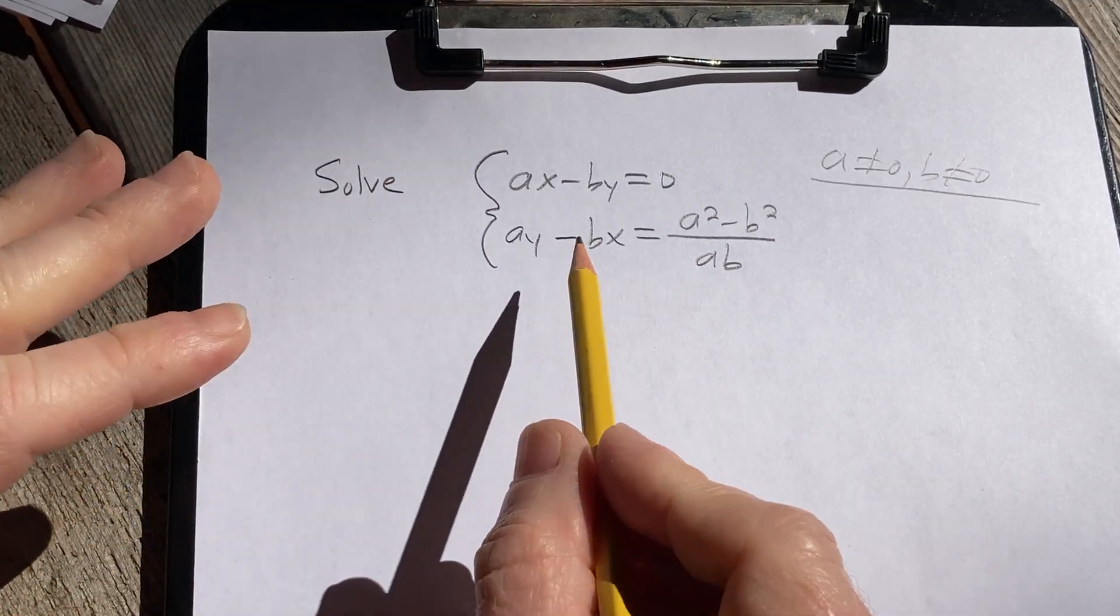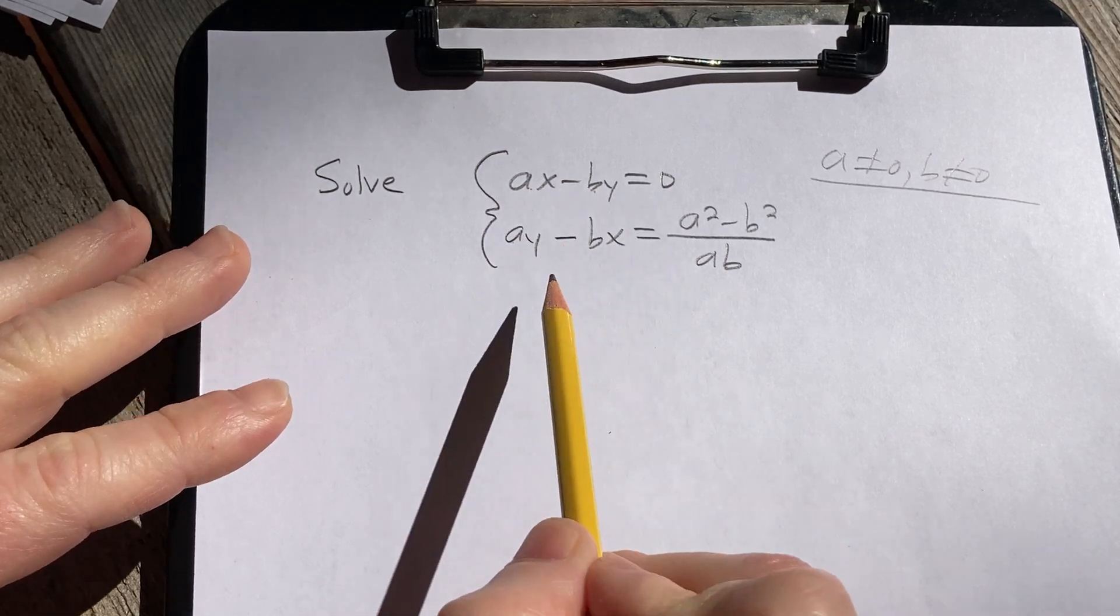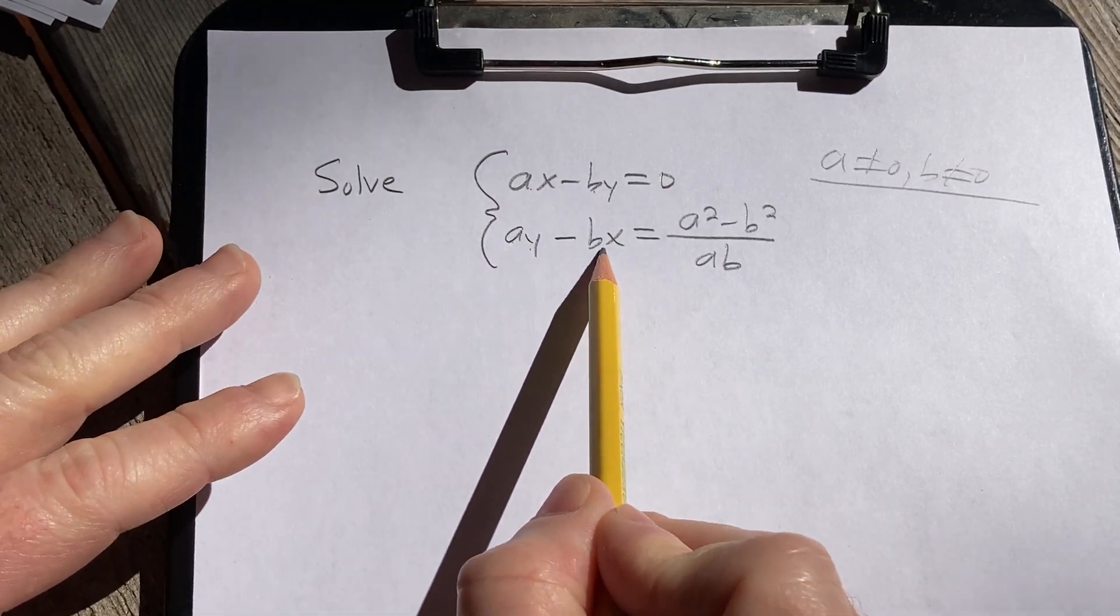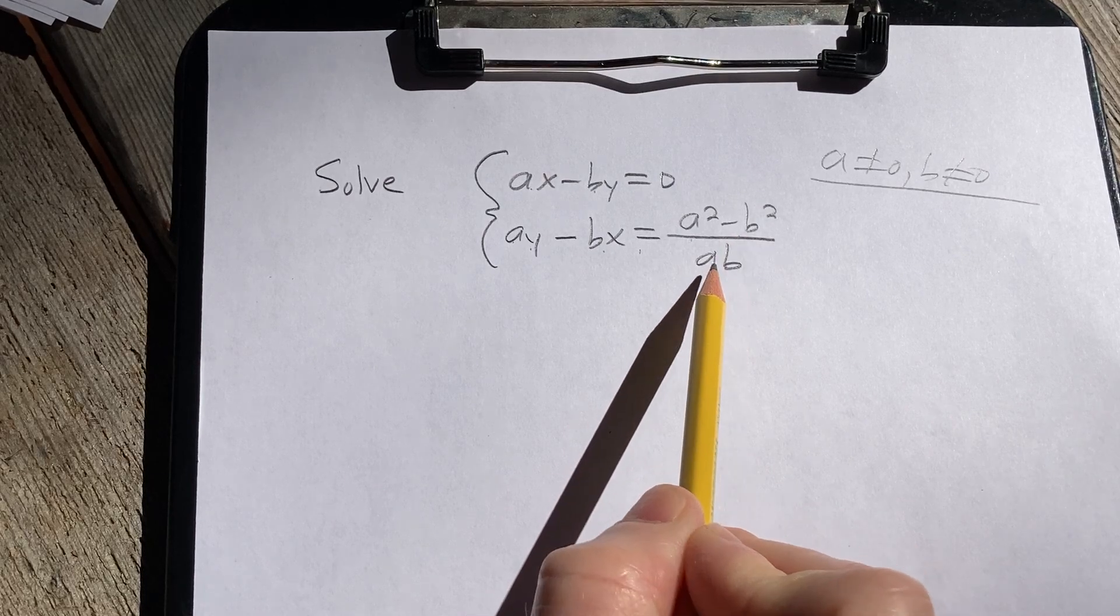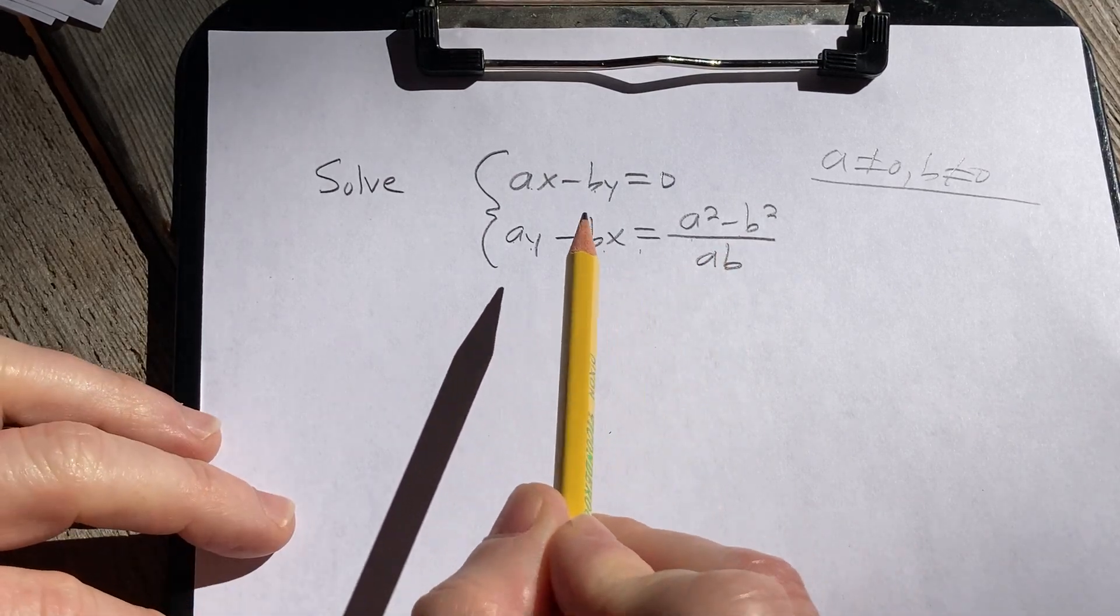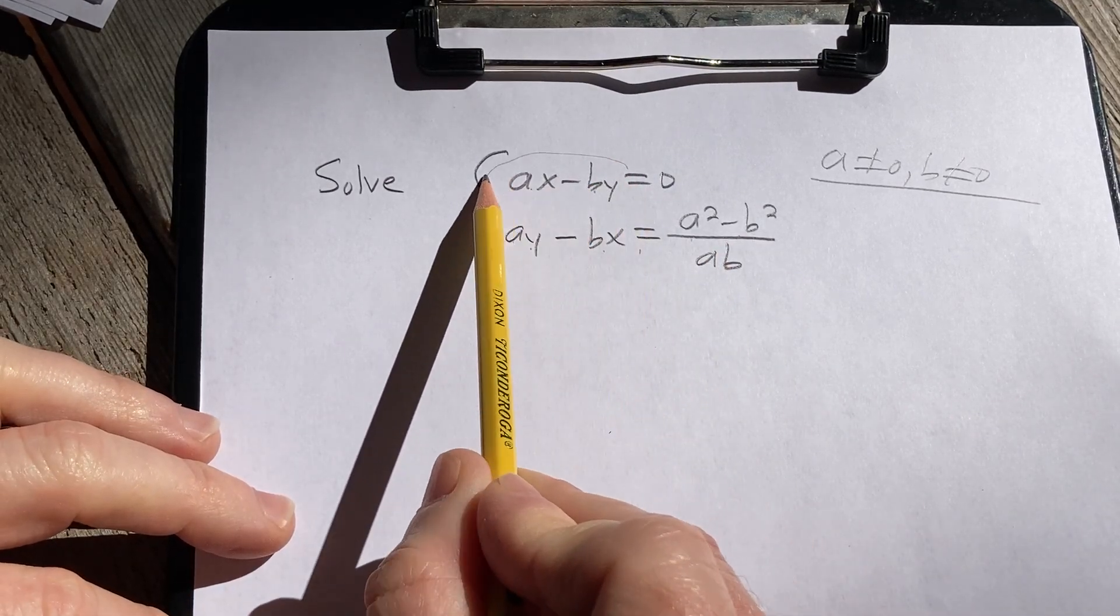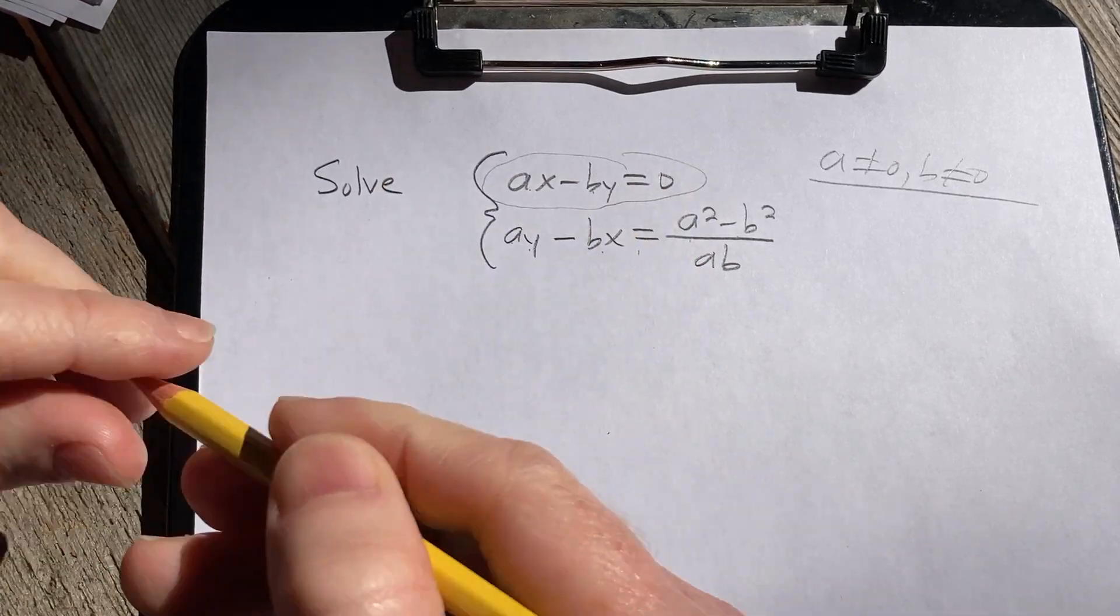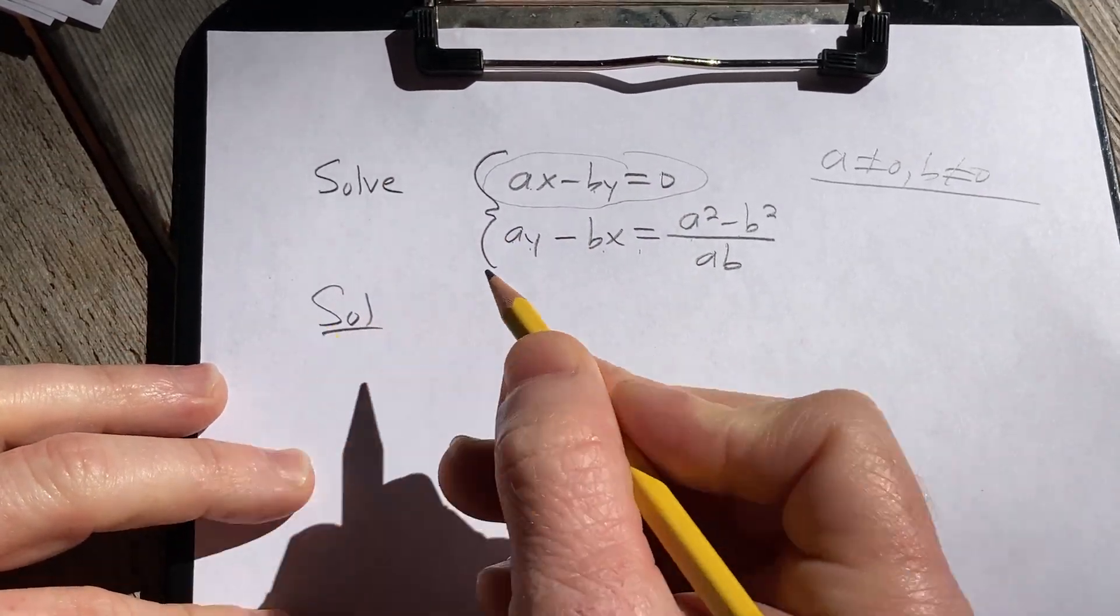Okay, so to solve this we've got ax minus by equals zero, and ay minus bx equals a squared minus b squared all over ab. So I'm thinking we can take this one maybe and solve for x. So, solution. And then we can do some type of substitution.